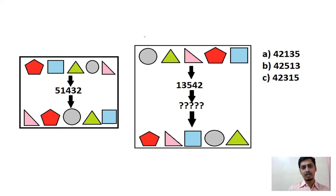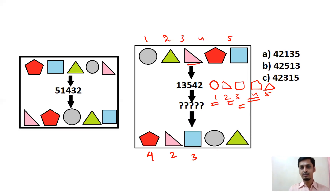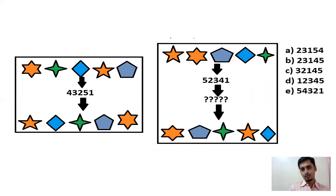Write 1, 2, 3, 4, 5. You have: circle (1), right-angle triangle (3), square (5), pentagon (4), equilateral triangle (2). Now write 1–5 over the output symbols: pentagon is 4, right-angle triangle is 2, square is 3, circle is 1, equilateral triangle is 5. So the answer is 4, 2, 3, 1, 5 — option C.